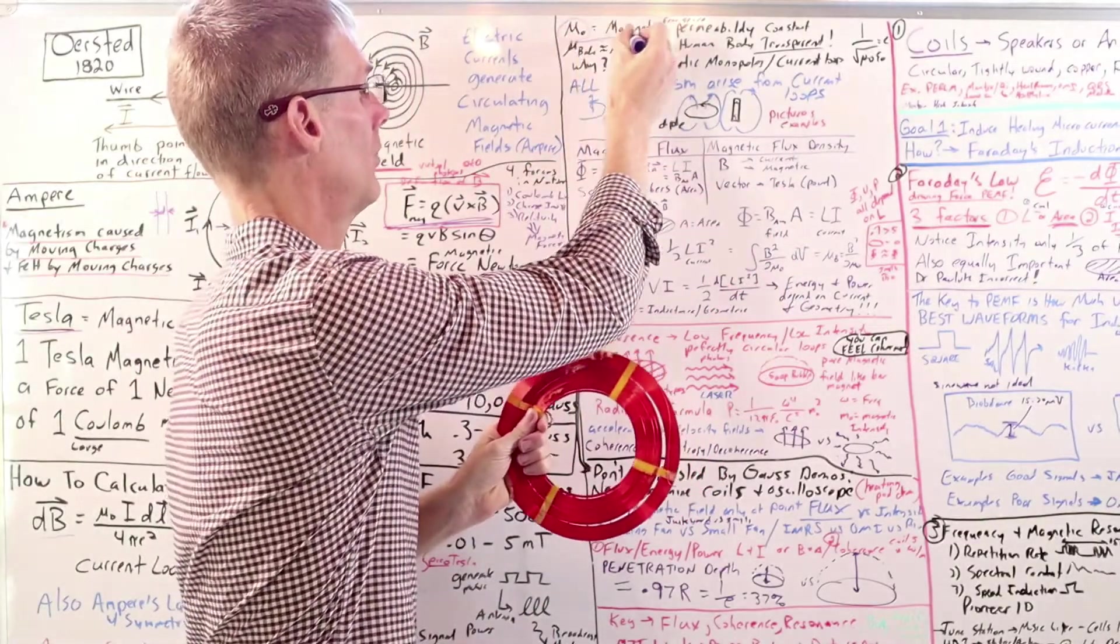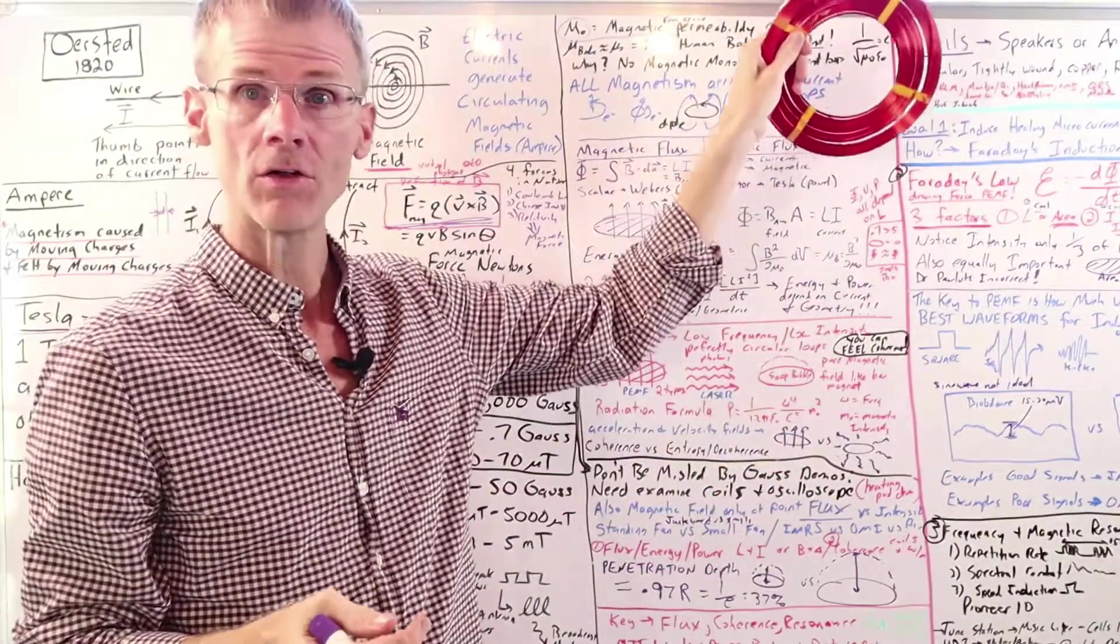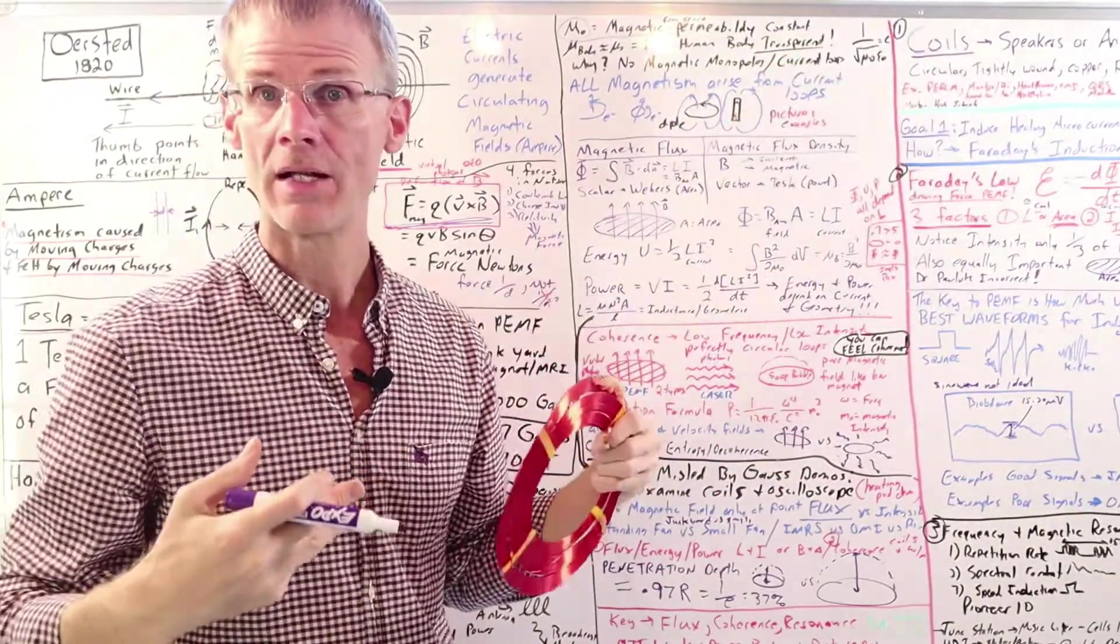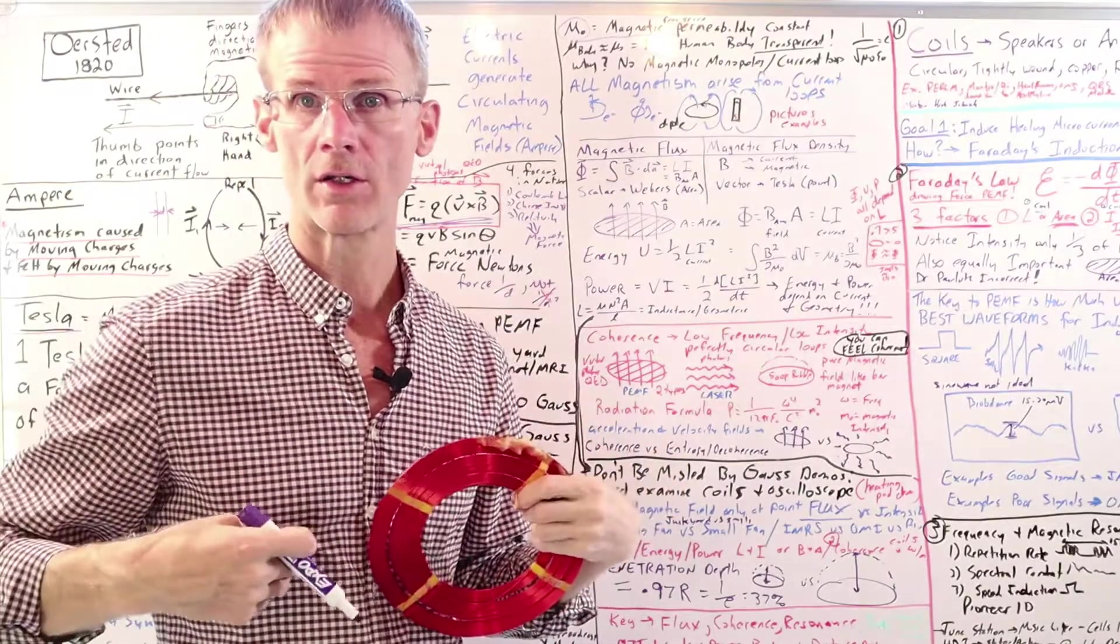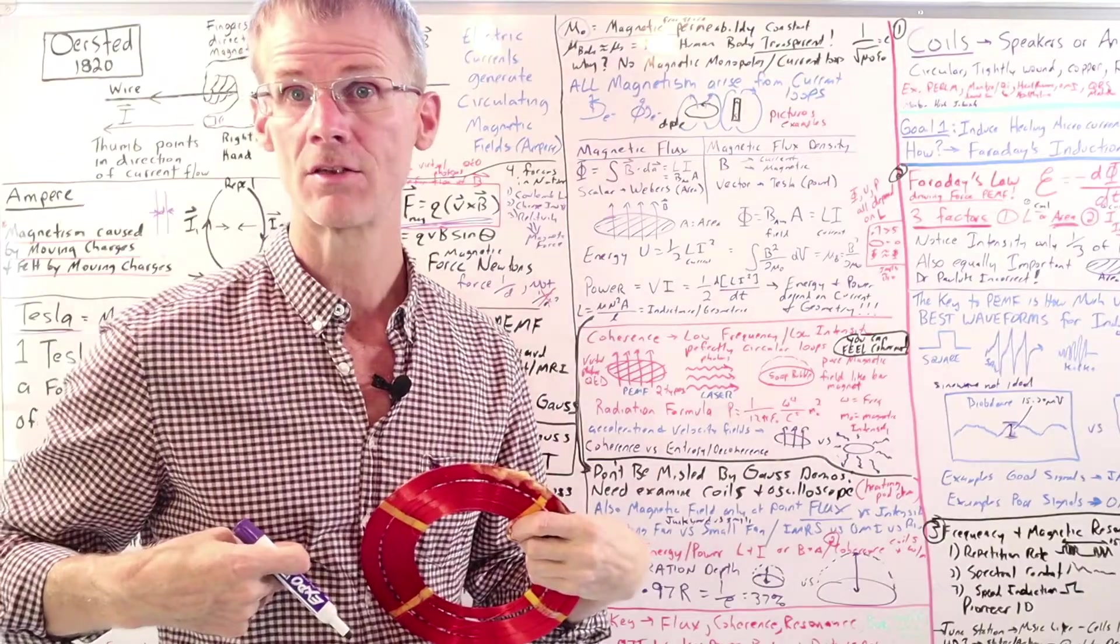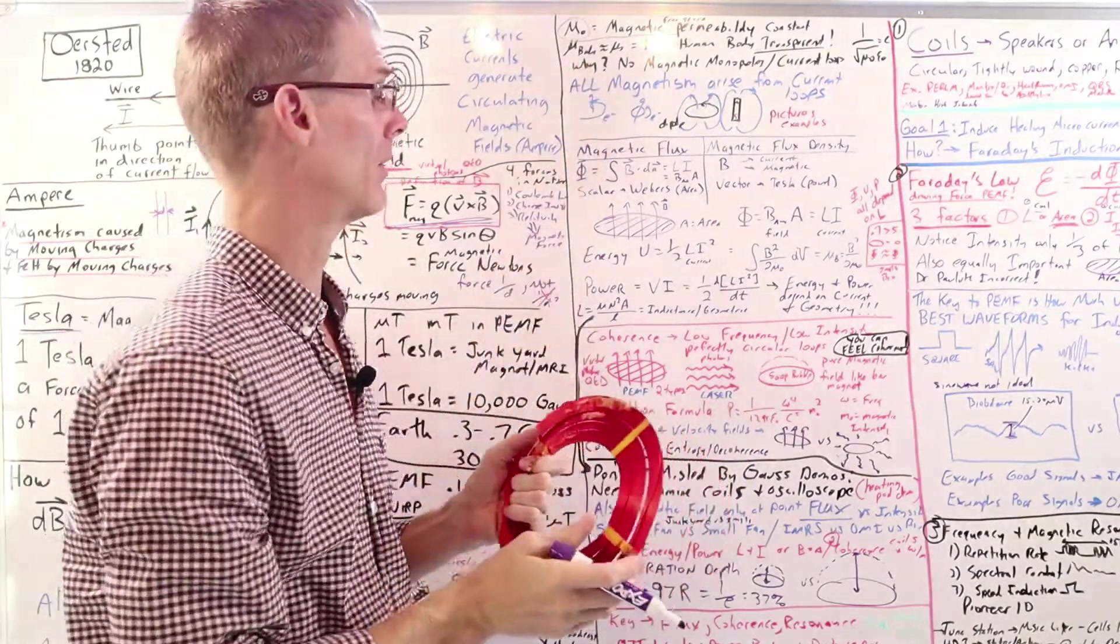Because the magnetic field permeability constant of the human body is one, which is the same as free space, where with electric fields, it's 50, meaning the human body shields electric fields up to 50 times. And same with microcurrents. Microcurrents, you've got to deal with skin impedances and different types of resistances of the skin. Not so with PEMF therapy.